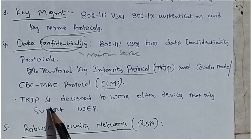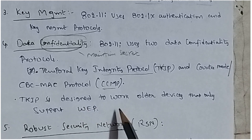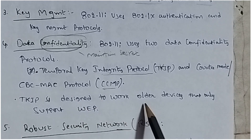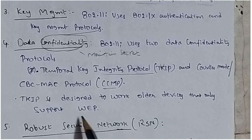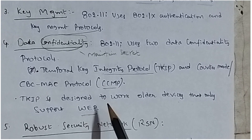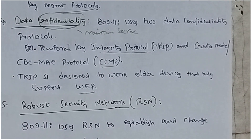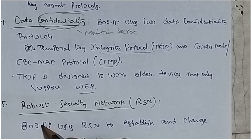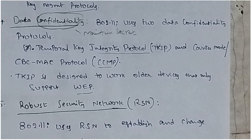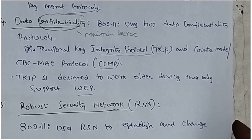TKIP is designed to work with older devices that only support WEP applications. The next feature is the Robust Security Network. 802.11i uses RSN to establish and change the cryptographic keys.